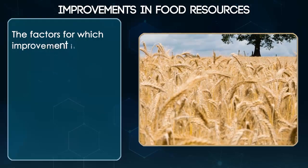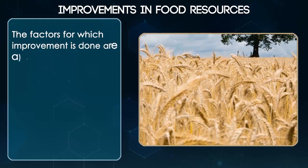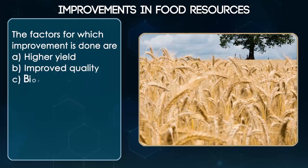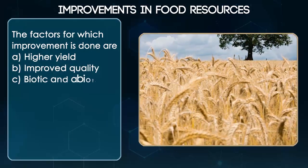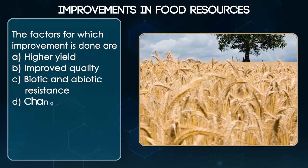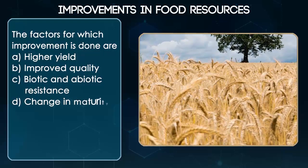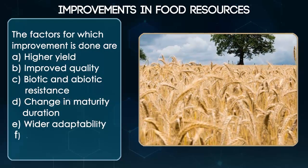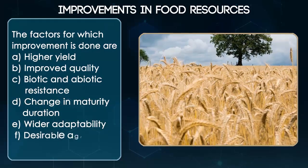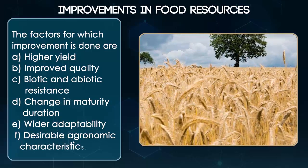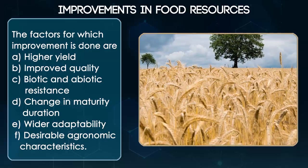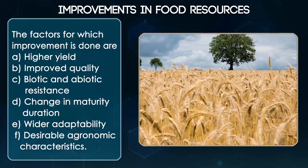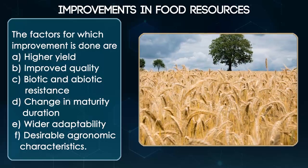The factors for which improvement is done are: A. Higher yield, B. Improved quality, C. Biotic and abiotic resistance, D. Change in maturity duration, E. Wider adaptability, F. Desirable agronomic characteristics.